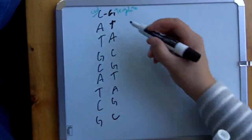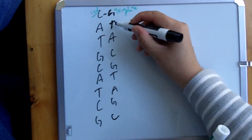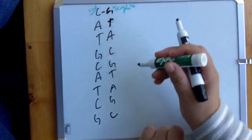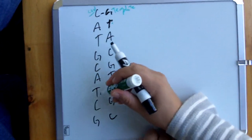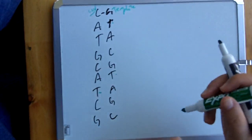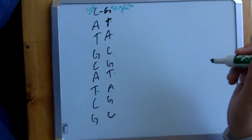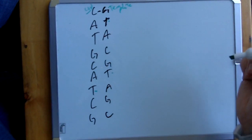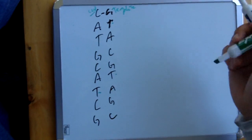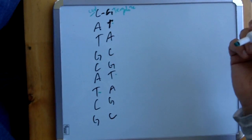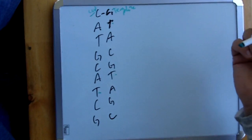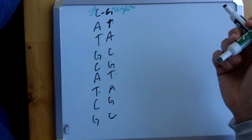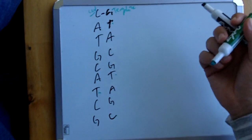Notice that we have T's in here. You're only going to have T in DNA — thymine is only in DNA. If you had the letter U, you would know that it's RNA.